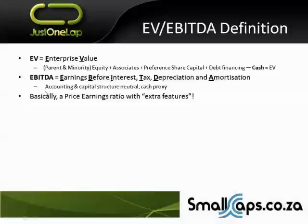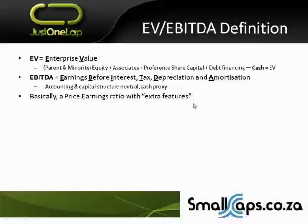EBITDA is quite an important measure because it is accounting and capital structure neutral. Accounting neutral because you're stripping out depreciation, amortization, and deferred tax. Capital structure neutral because you're measuring it versus enterprise value that includes all financing components, and because it is before interest. EBITDA is really a cash proxy - it should approximate cash flow from operations. Essentially, EV/EBITDA is a price-earnings with extra features: it is accounting and capital structure neutral price-earnings. That is probably the best way to remember it.